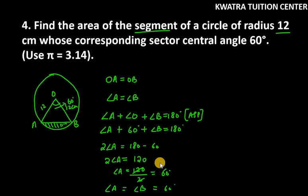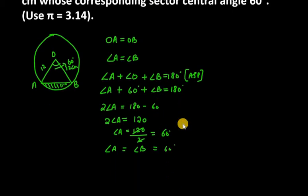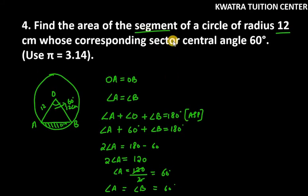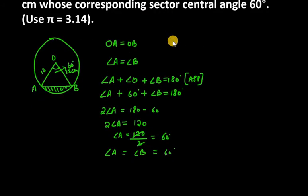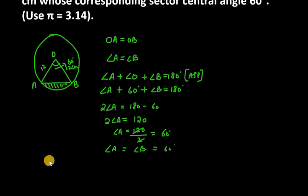So now as I stated earlier that we have to find area of segment. So for area of segment we need area of sector minus area of triangle OAB. That is equilateral triangle.